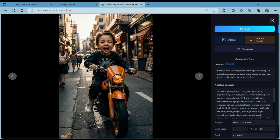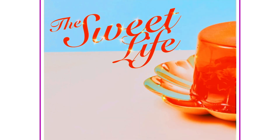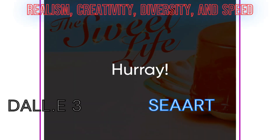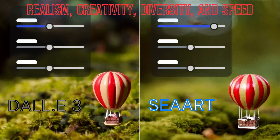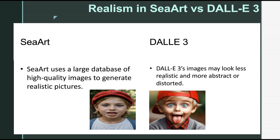SeaArt and DALL-E 3 are both generative models that can produce stunning images from text prompts. They use different techniques and algorithms to transform your ideas into visual reality. We will compare SeaArt and DALL-E 3 based on four criteria: realism, creativity, diversity, and speed. Realism — how realistic and natural the images look. SeaArt is better than DALL-E 3 in this criterion, as it uses a large database of high-quality images to match the words and generate realistic pictures. DALL-E 3's images may look less realistic and more abstract or distorted than SeaArt's images.